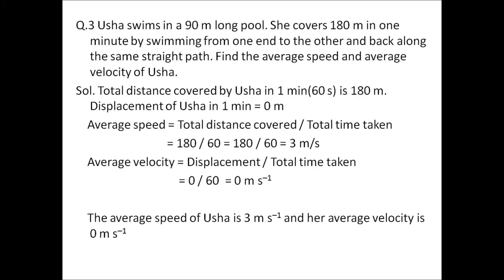Next we calculate velocity. Usha swims from one end to the other and comes back along the same straight path, so the displacement of Usha is zero. The formula for average velocity is displacement divided by total time taken — substituting the value, average velocity comes out to be zero. So the average speed of Usha is 3 meters per second and her average velocity is zero meters per second, showing that average velocity can be zero but average speed can never be zero.